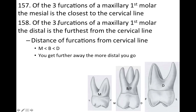Now we're going to get into the furcations. There are three furcations: mesial, buccal, and distal. Of the three furcations of a maxillary first molar, the mesial is the closest to the cervical line. The distance of the furcations from the cervical line goes mesial, then buccal, then distal — so the more distal you go, the further the furcation gets. The distal is the furthest from the cervical line, and the mesial is the closest.